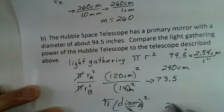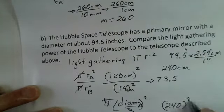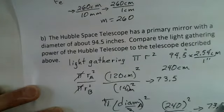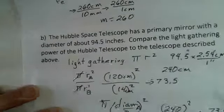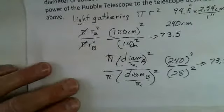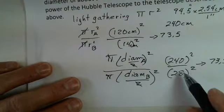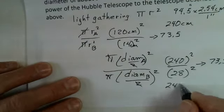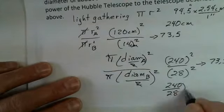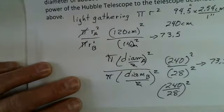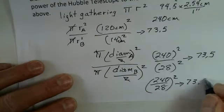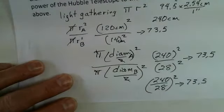240 squared divided by 28 squared gives 73.5—the same value using diameter rather than radius. This is easier than finding the radius first. Alternatively, you can divide the diameters (240 divided by 28) and then square the result.